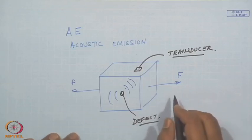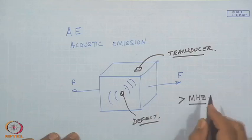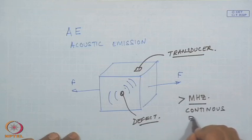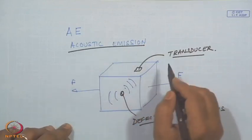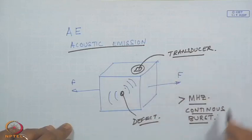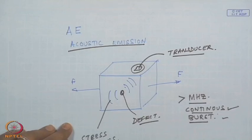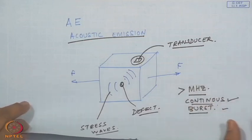There are certain characteristics of this acoustic emission signal. First of all, it is in the megahertz range. It is either transient — in the form of a continuous waveform — or in bursts of certain energy. The acoustic emission strategy is to detect these stress waves, measure them, and analyze them.